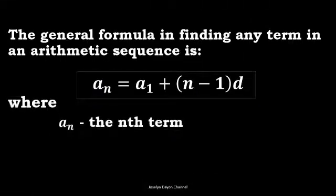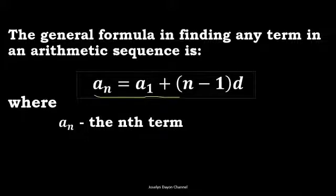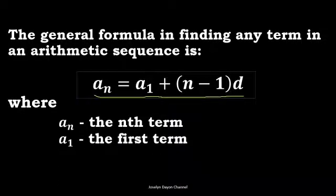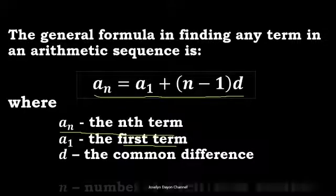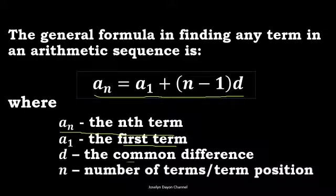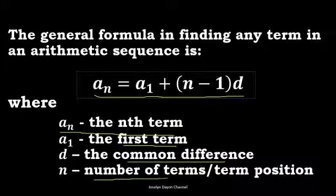The general formula in finding any term in an arithmetic sequence is: a sub n equals a sub 1 plus the quantity of n minus 1 times d, where a sub n is the nth term, a sub 1 is the first term, d is the common difference, and n is the number of terms or the term position.